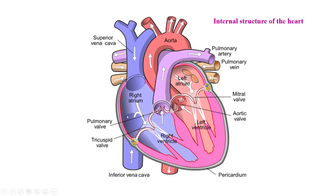You can see another valve where the right atrium opens into the right ventricle — that is called the tricuspid valve. And you can see another valve where the aorta originates from the left ventricle — there the aortic valve is present. And where the pulmonary artery originates in the right ventricle, there the pulmonary valve is present.